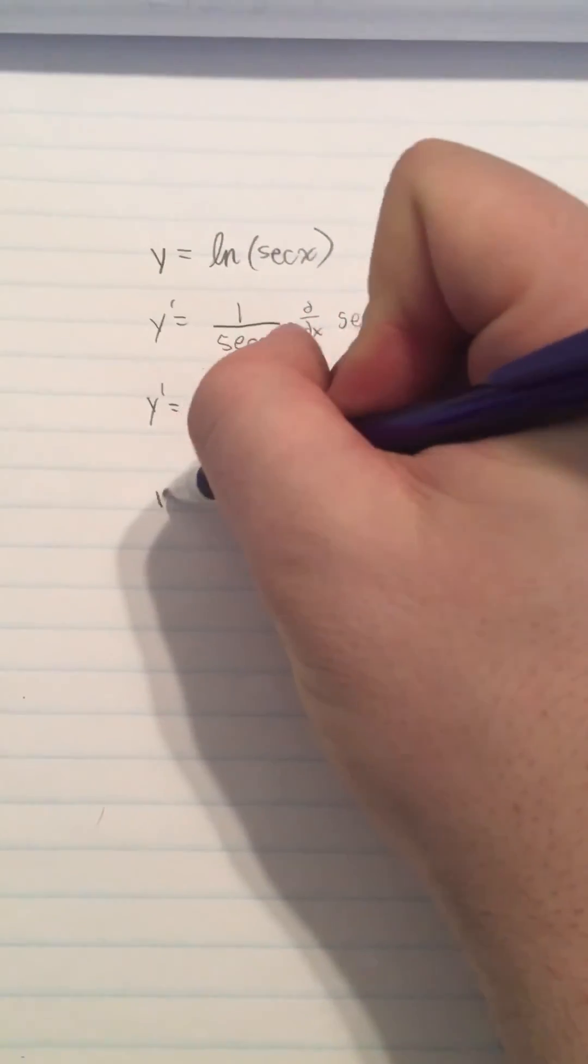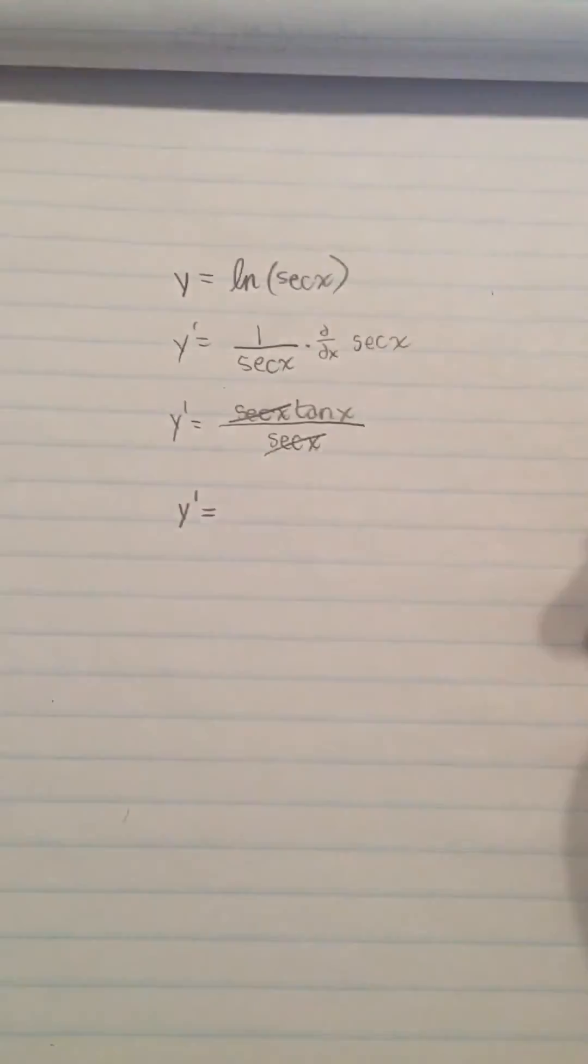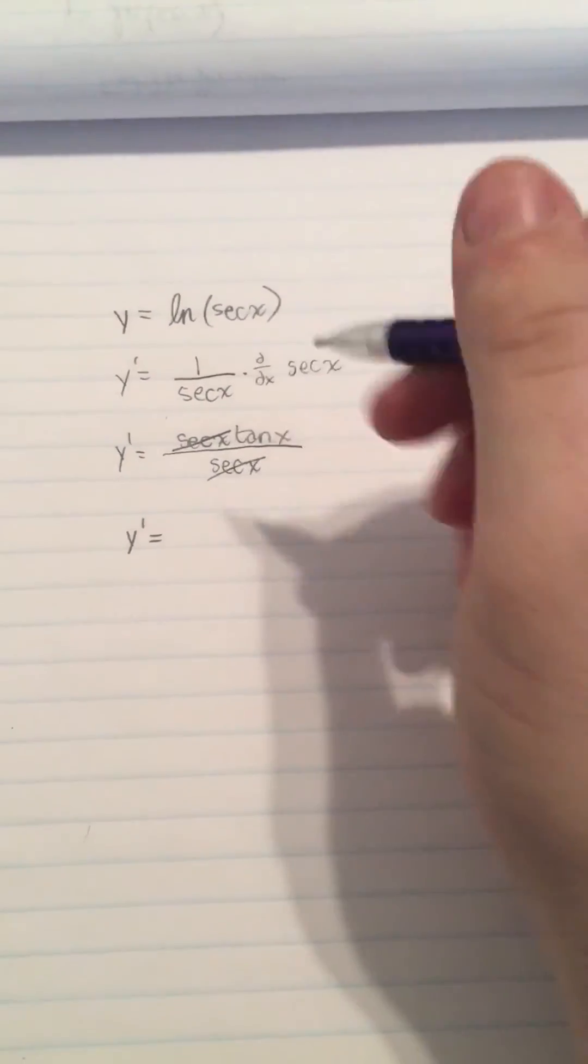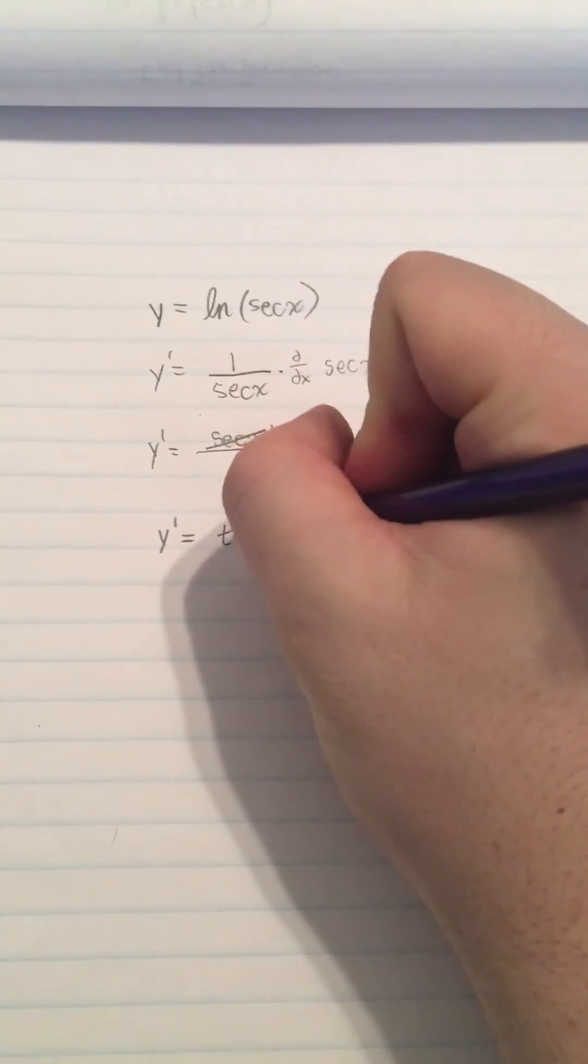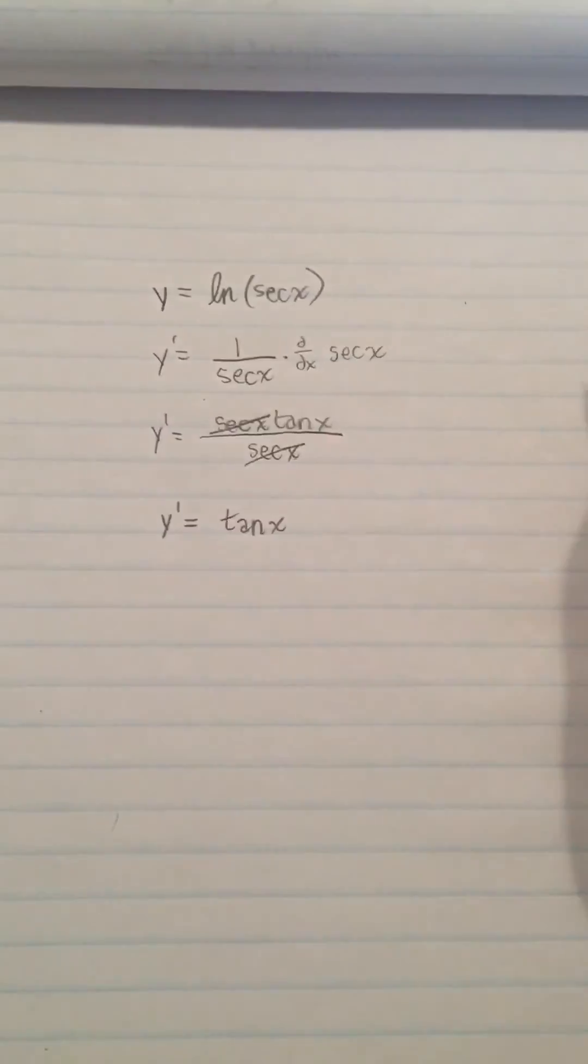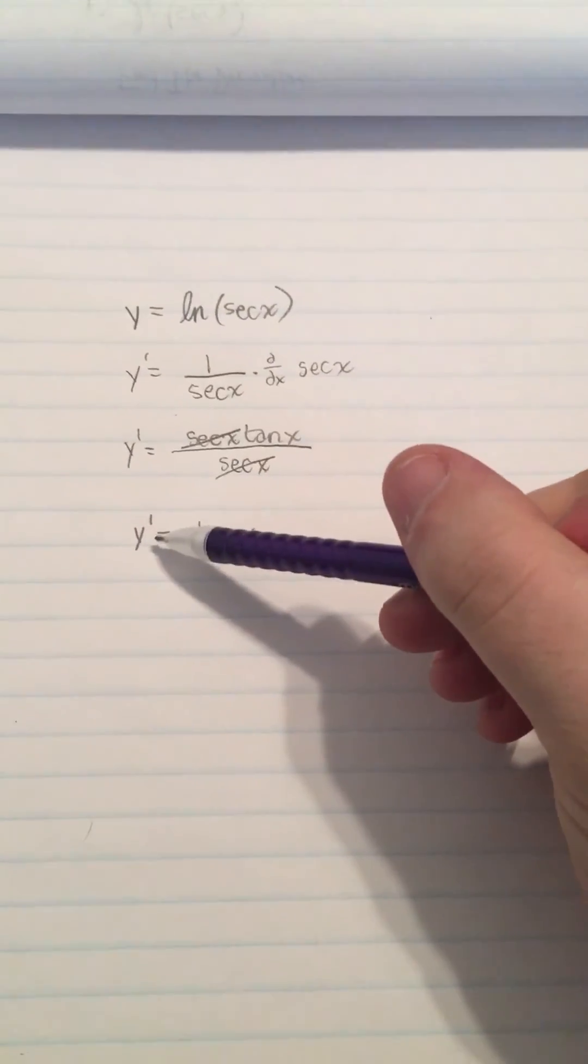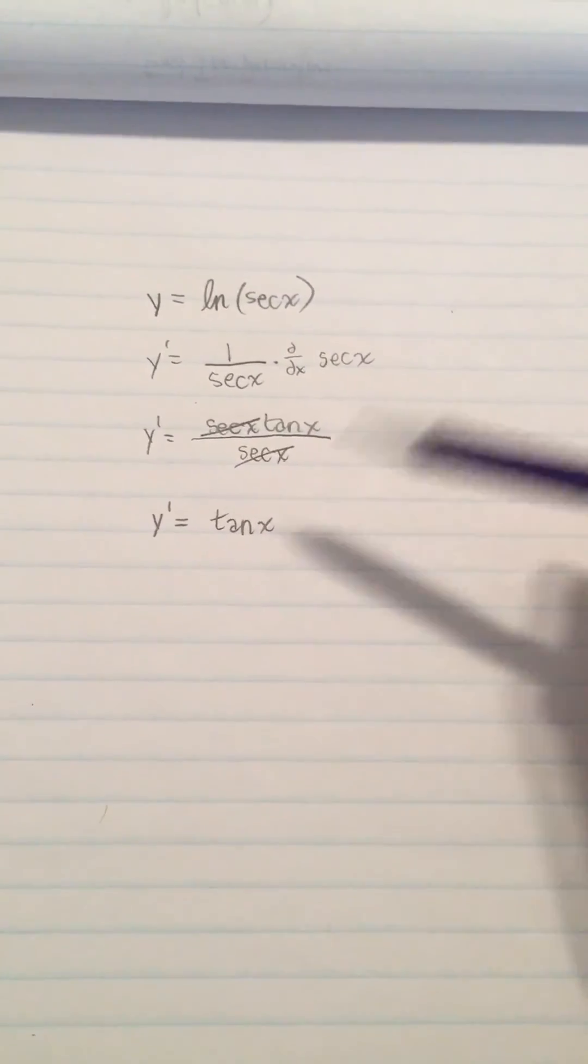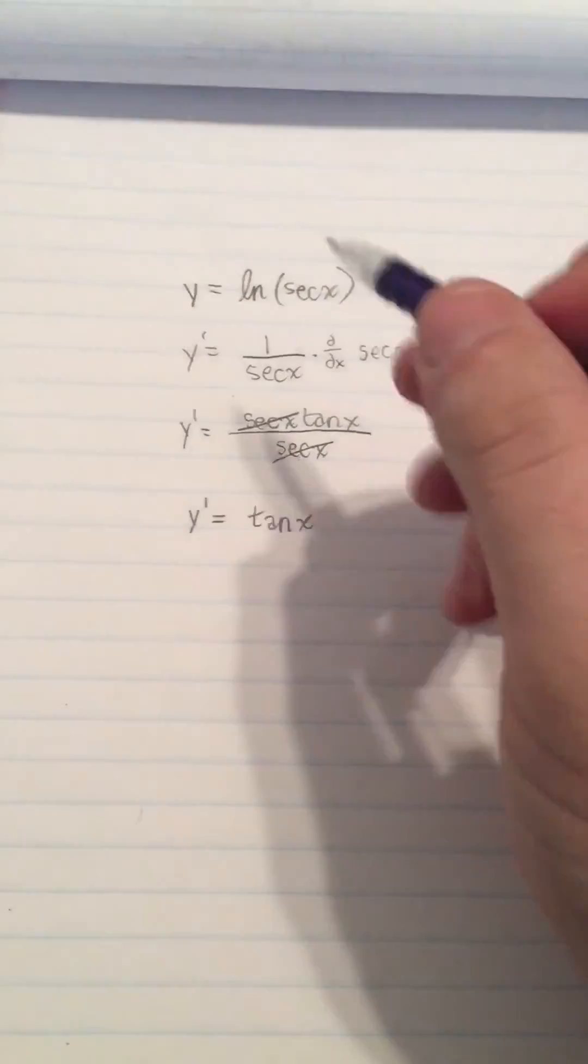That'll bring us down to our simple and easy answer for the derivative of natural log of secant x, which is simply tangent x. Y prime equals tangent x. Thank you.